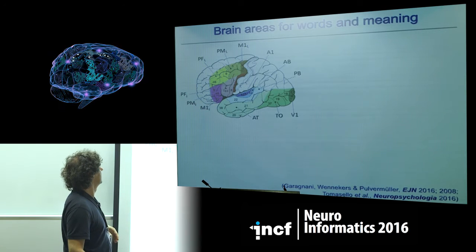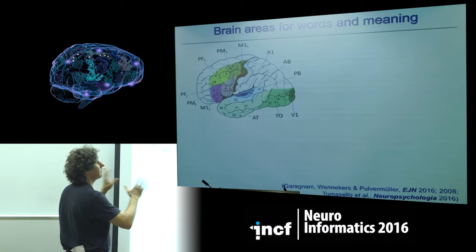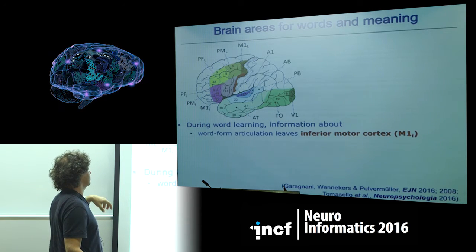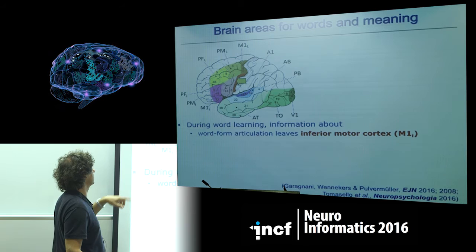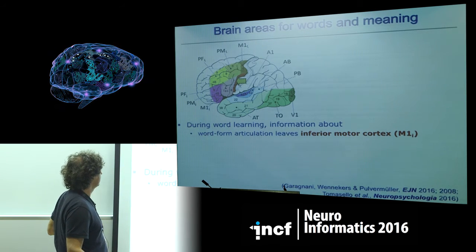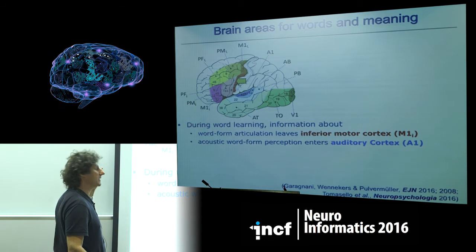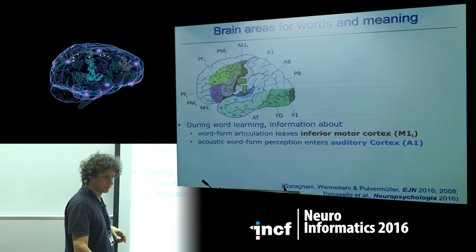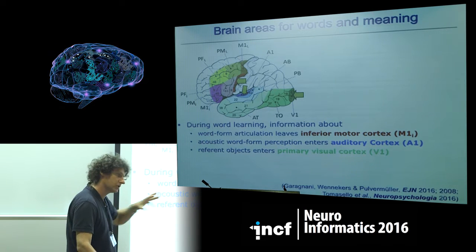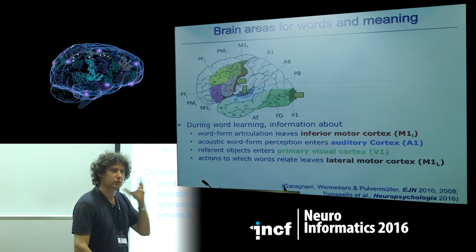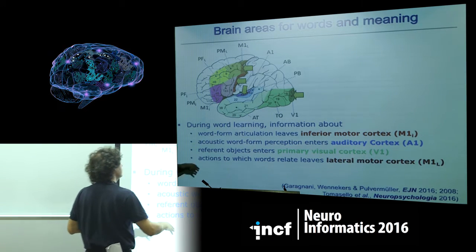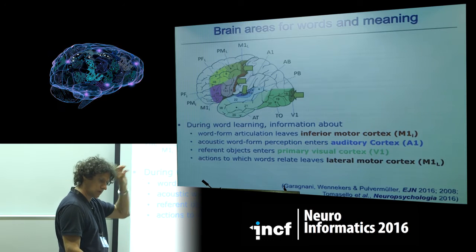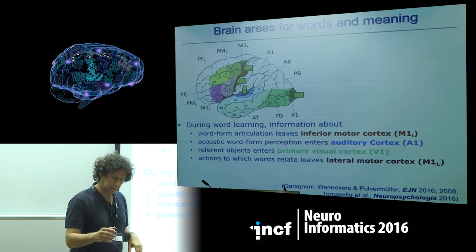To summarize the brain areas relevant for word learning and meaning: articulation information comes from the inferior motor cortex; perception of corresponding sounds activates the primary auditory cortex; visual object perception activates the visual cortex; and hand or arm movement execution is typically controlled by the dorsolateral part of the motor strip. These four primary areas are neuroanatomically connected through cortical areas through which bundles of fibers pass, enabling their linkage.